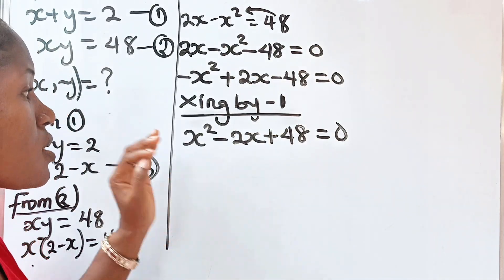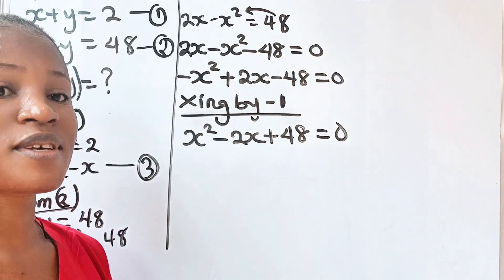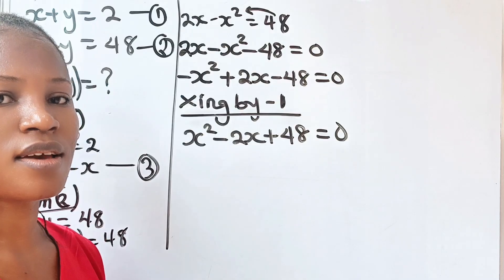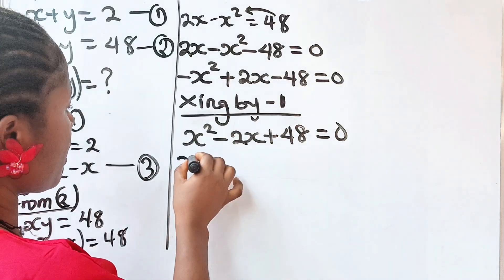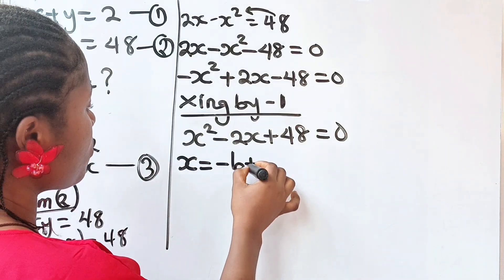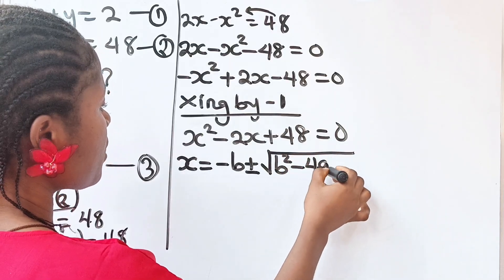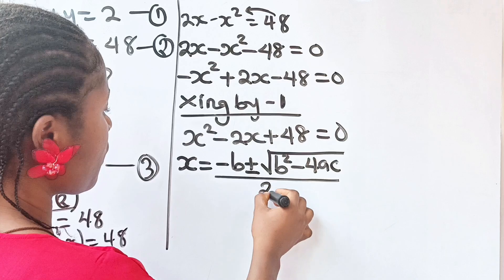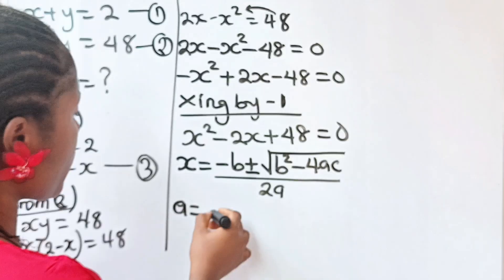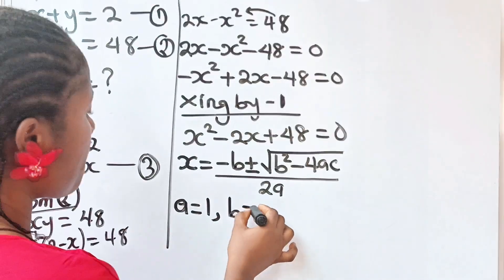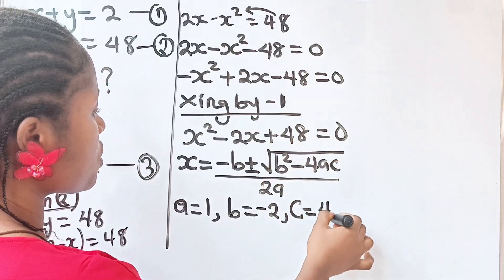This is a quadratic equation that we cannot solve using the factorization method, so the only option is to use the quadratic formula. The quadratic formula states that x equals negative b plus or minus the square root of b squared minus 4ac, all divided by 2a. Our a is the coefficient of x squared, which is 1. Our b is the coefficient of x, which is minus 2. And our c is the constant, which is 48.